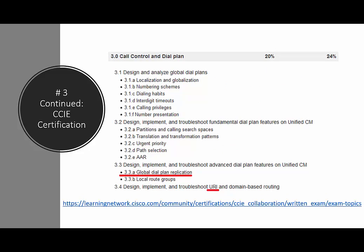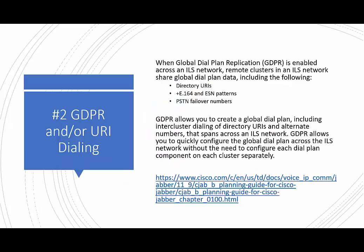Continuing on that same path, the CCIE certification also calls out on its blueprint ILS, GDPR, URI dialing, and things of that nature which are enhanced with ILS. Actually, GDPR is an enhancement of ILS. And that is a segue into number two: GDPR and/or URI dialing. Global dial plan replication allows the ILS network to share global dial plan data, such as directory URIs, E164 dialing and ESN patterns, as well as PSTN failover numbers.